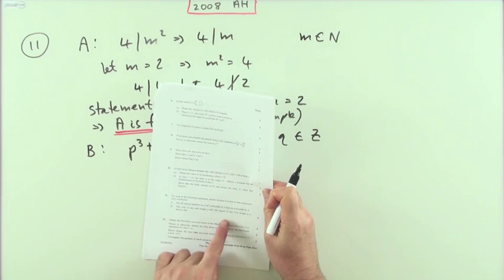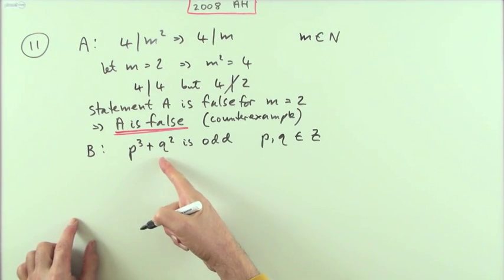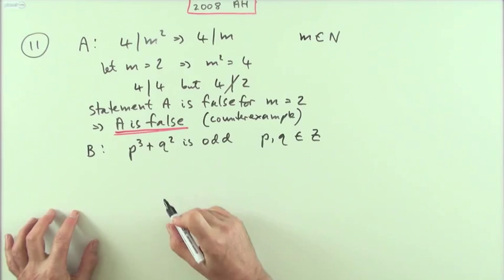B: The cube of any odd integer p and the square of any even integer q is always odd, with p and q are integers. Well, this will be like direct proof then, so I'll have to do two things to demonstrate that, which would be rewrite these in terms of some other values.